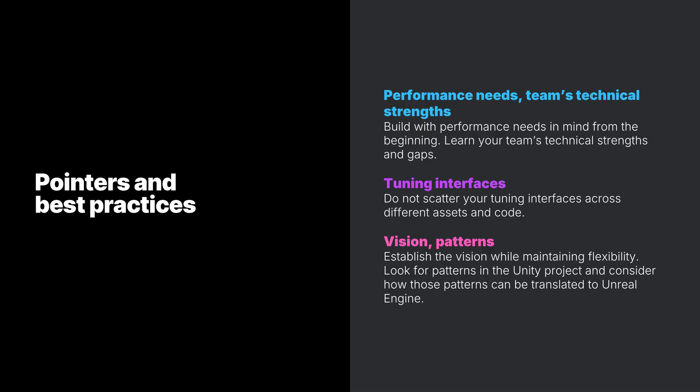To wrap up, some pointers and best practices for converting a project from Unity to Unreal Engine: build with performance needs in mind from the very beginning; learn your team's technical strengths and gaps; do not scatter your tuning interfaces across different assets and code; establish the vision while maintaining flexibility; look for patterns in the Unity project and consider how those patterns can be translated to Unreal Engine. For deeper details, refer to the Inside Unreal deep dive video on the differences between blueprints and C++, and the Unreal Engine documentation, both linked in this video's description.